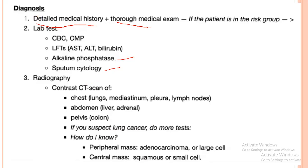Radiographic procedures performed include contrast CT scan — especially to examine the mediastinum — and CT scan of the abdomen to assess the adrenal glands and liver for metastasis, and the pelvis for colorectal cancer as a potential source.